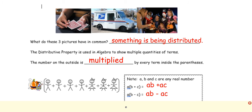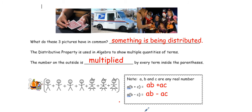So here we have someone giving candy to kids, and they would give each kid candy — four boys and three girls. So again, A times B plus C equals AB plus AC, and A times the quantity B minus C equals AB minus AC.